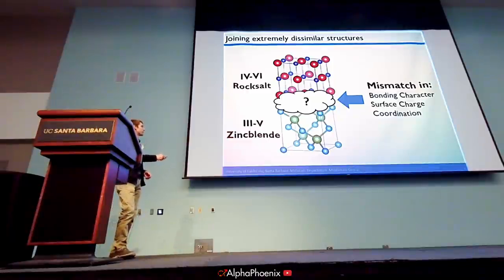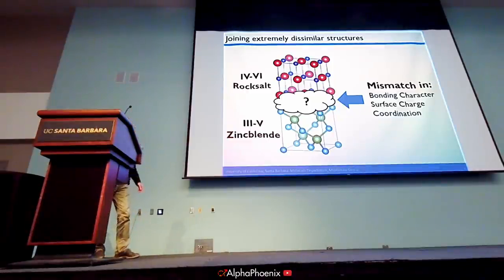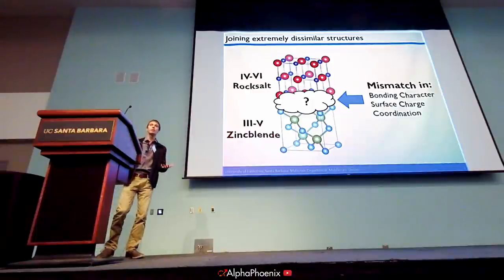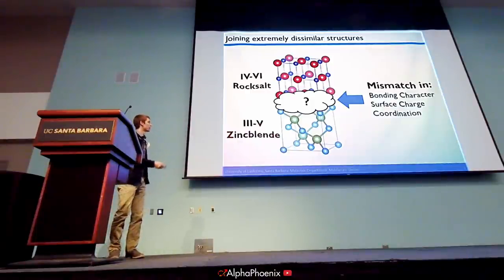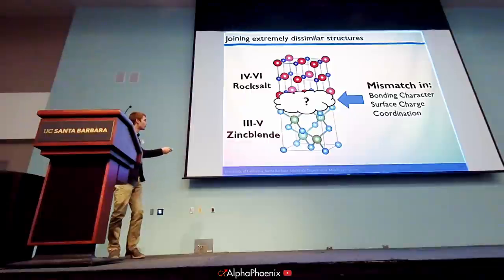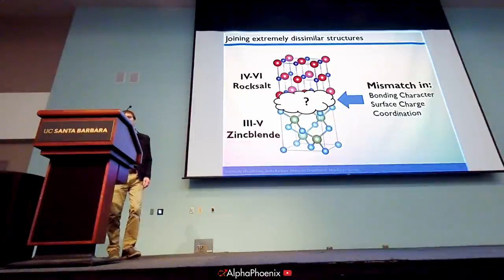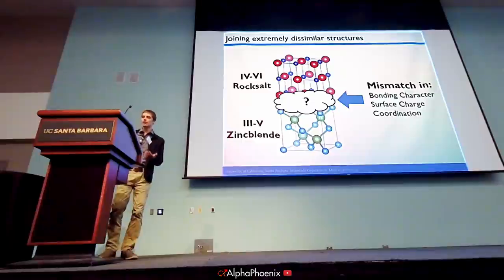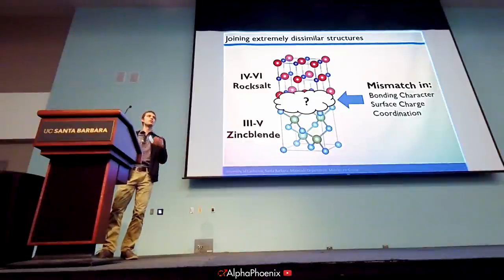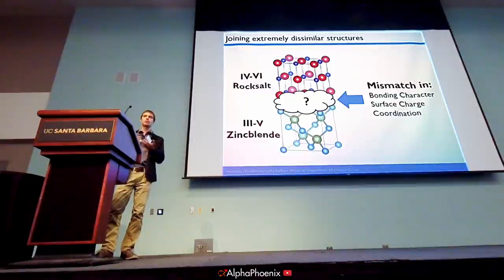I'm going to be talking a lot about this interface during the talk. But first I want to zoom out and talk about the 4-6 rock salts themselves — why do we want to study these materials, and why are we going through all this trouble to nucleate this particular crystal structure? We think the 4-6 rock salts are going to be very efficient materials for infrared light emission and detection.